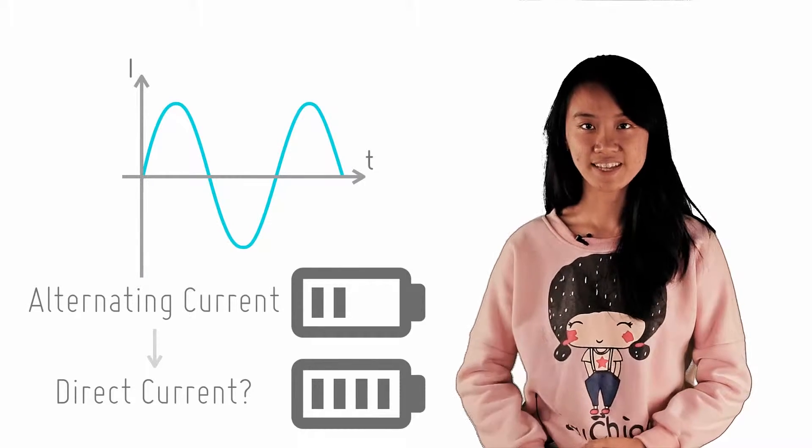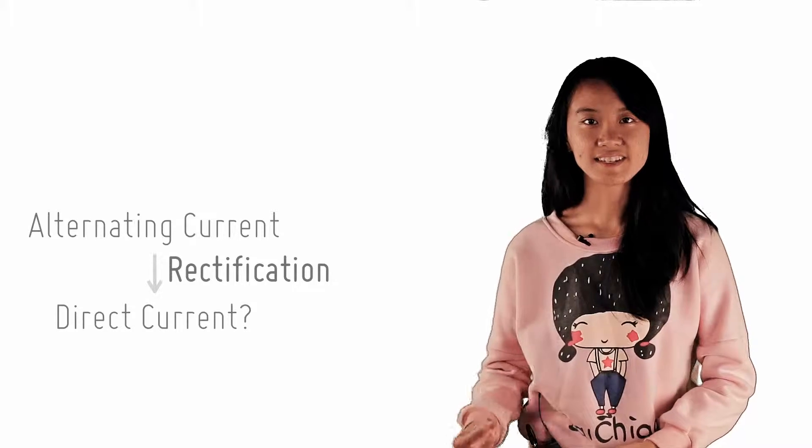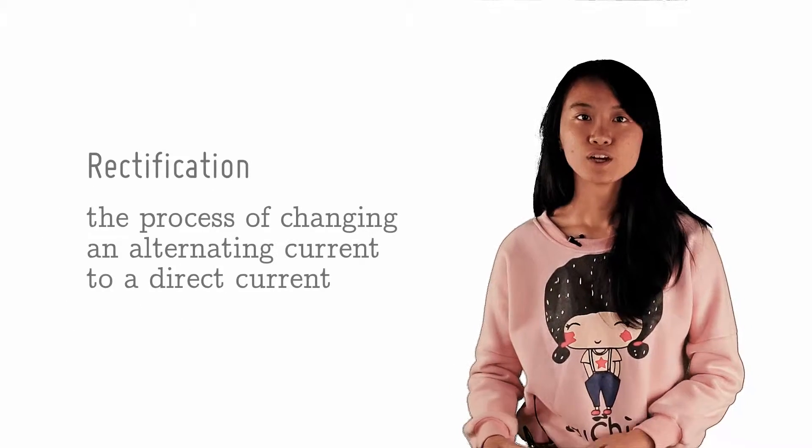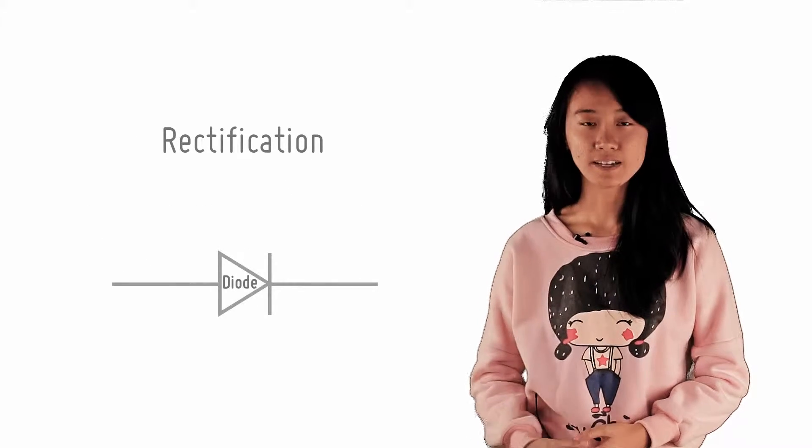This is done through rectification. So what is rectification? Rectification is the process of changing an alternating current to a direct current. To do so, diodes are used. A diode only conducts current in one direction.